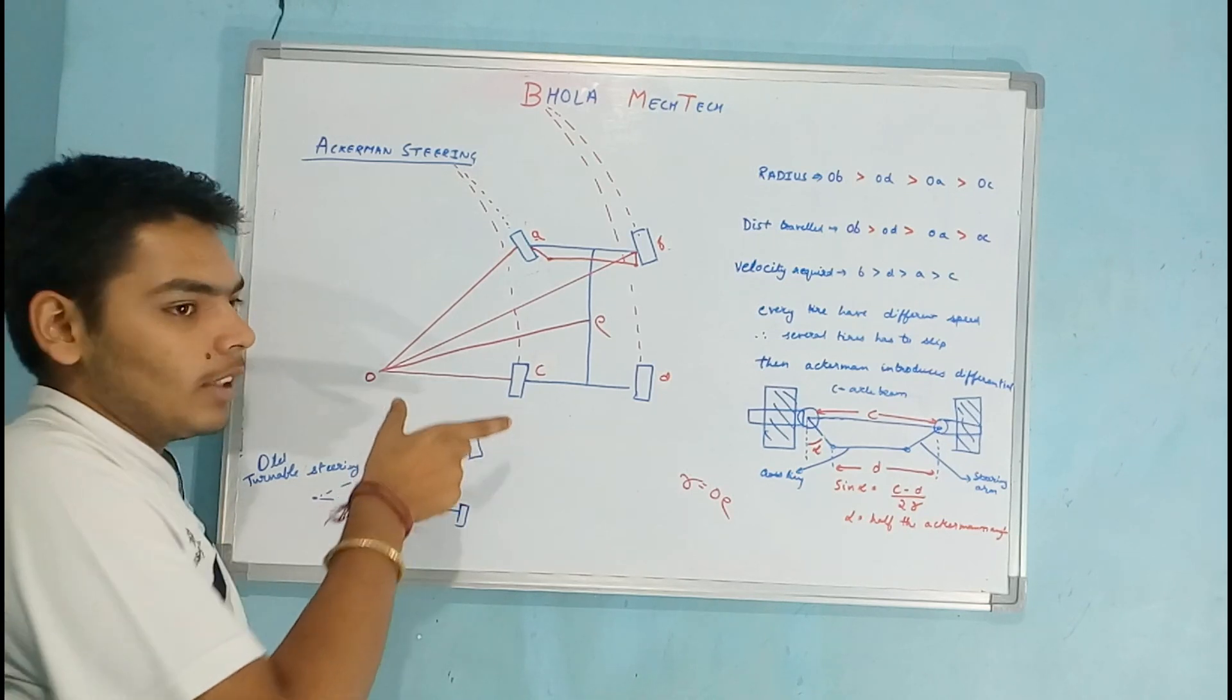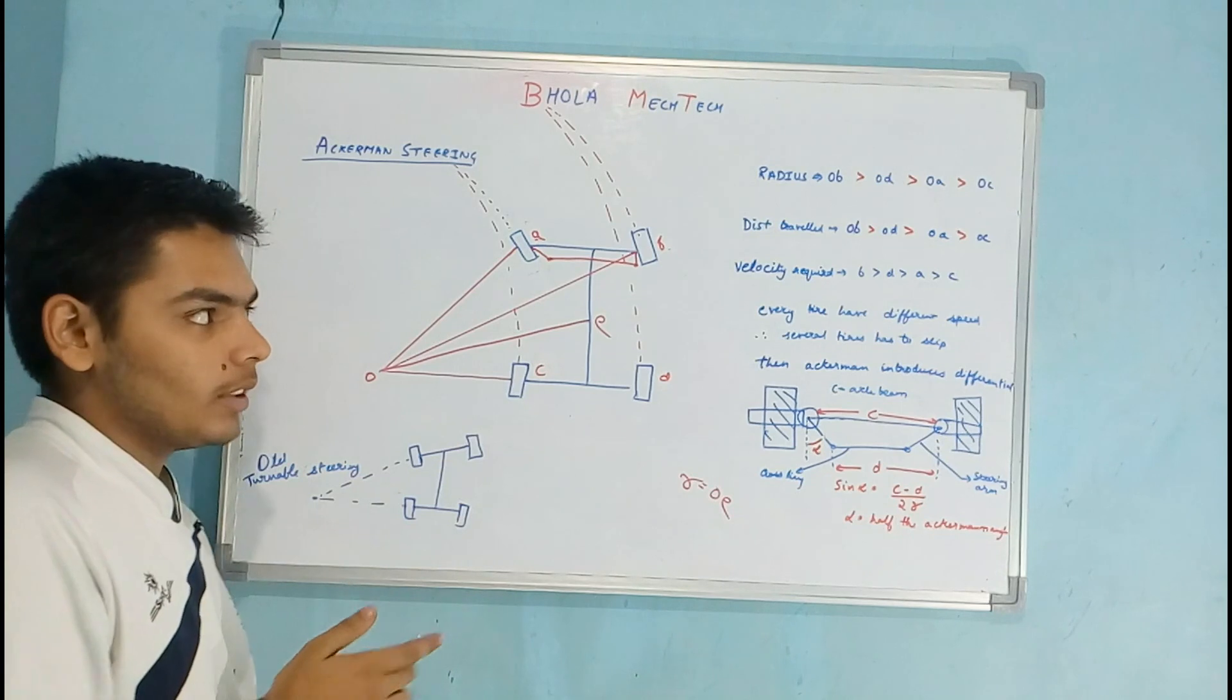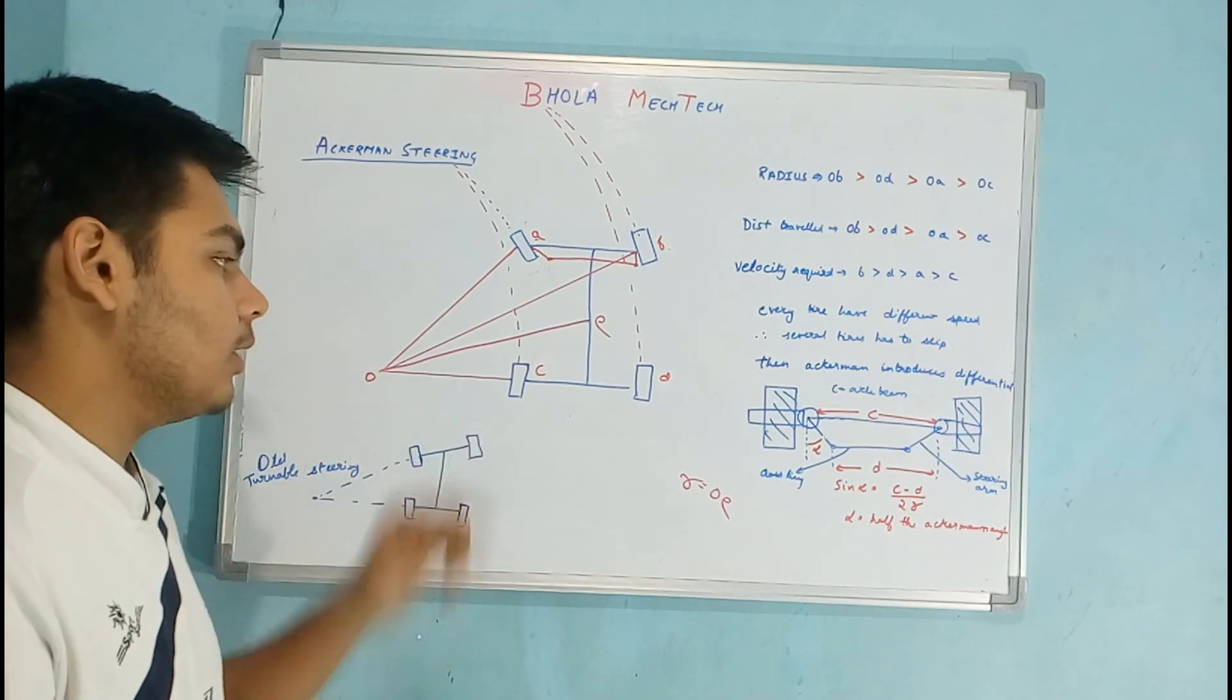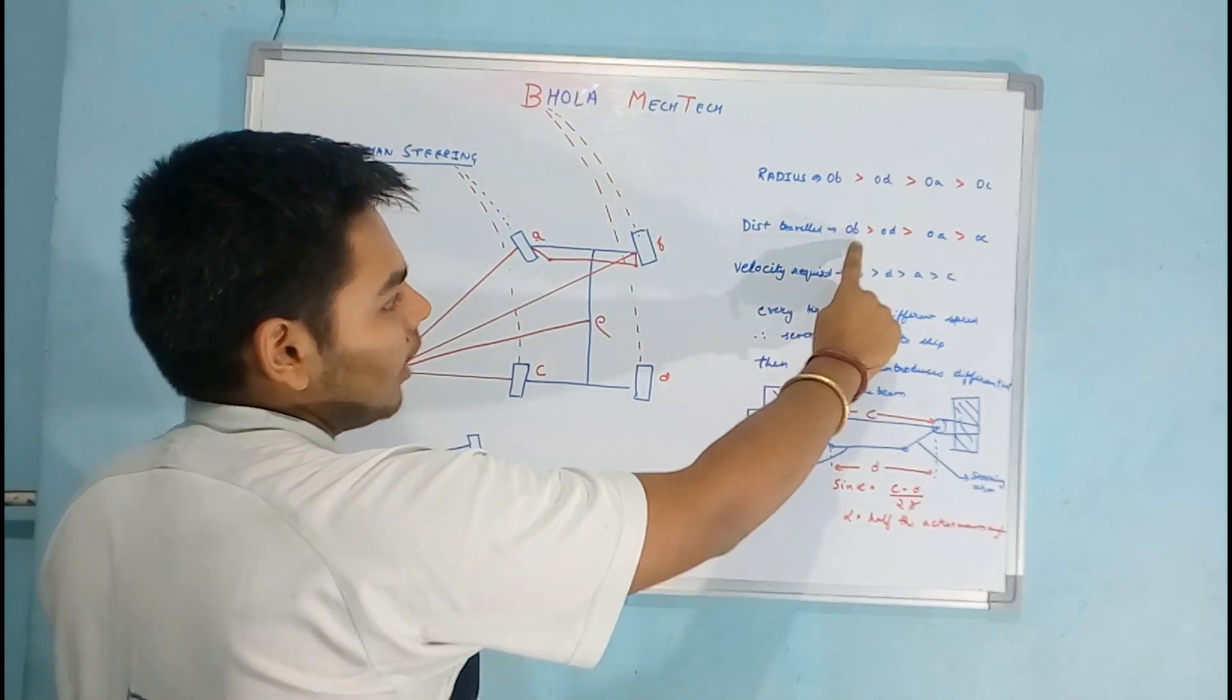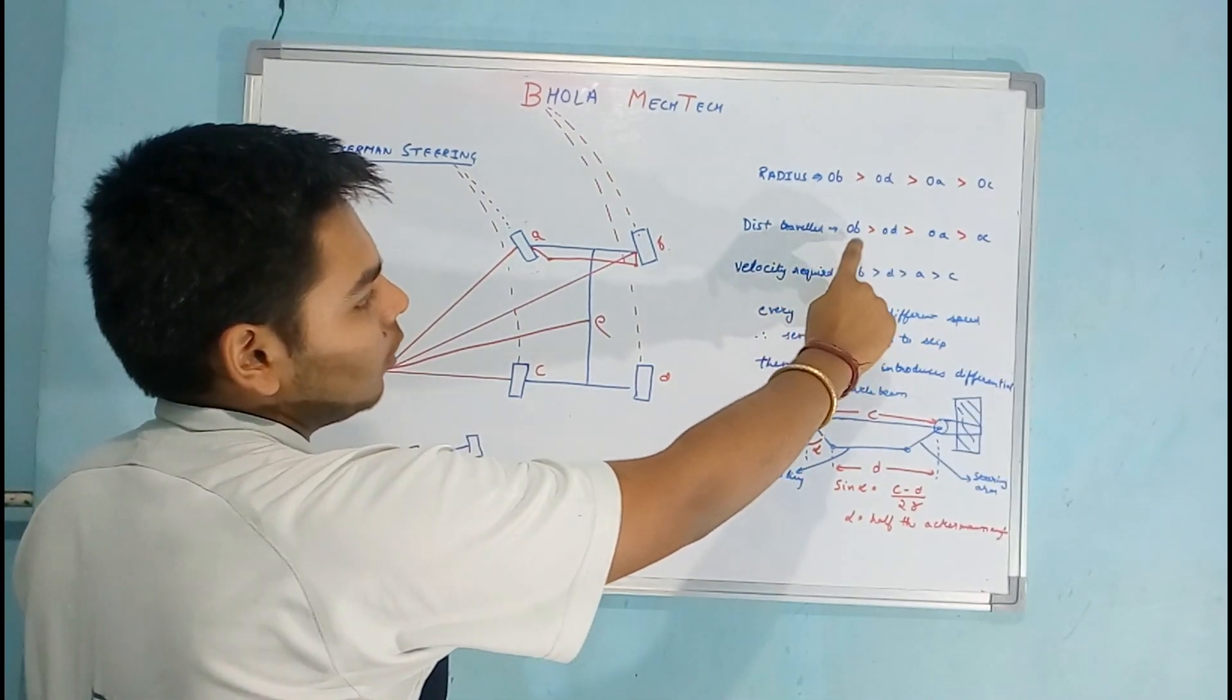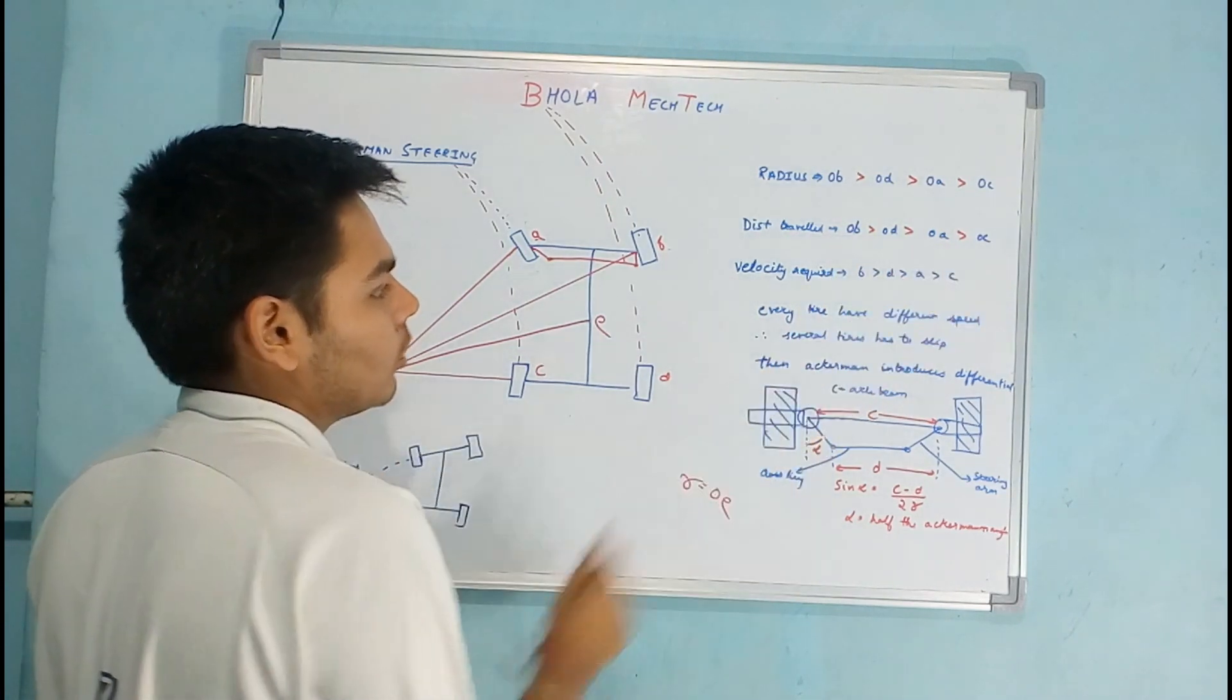The distance traveled by radius OB will be longer, then OD, then OA, then OC.